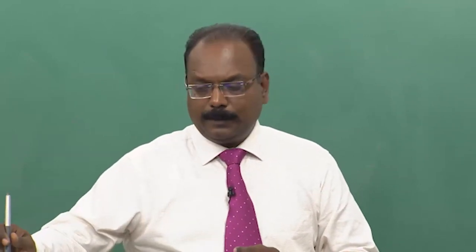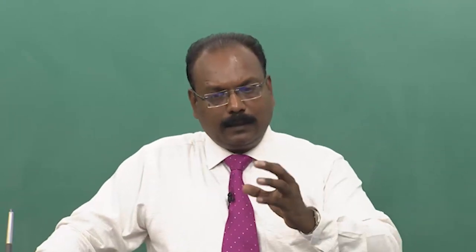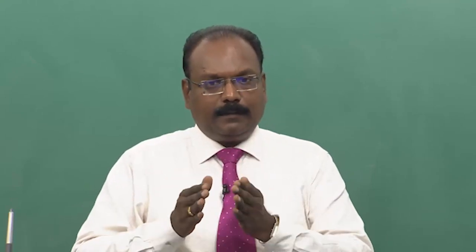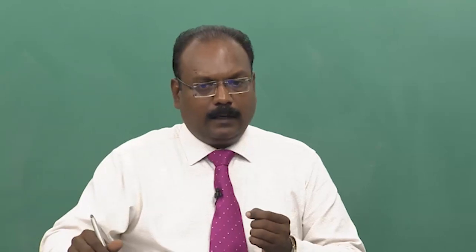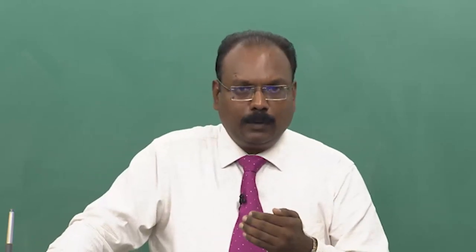Now, despite your best efforts to become an effective communicator, there could be some barriers — things that actually prevent you from communicating effectively. Sometimes it is in you, your personality; sometimes it is because of the receiver. Even when you are trying to involve yourself in encoding and decoding a message, and the other person is trying to decode and understand, there is something in between acting as obstacles — what I call barriers. In this lecture, we will identify what barriers are, how they affect communication, and how we can overcome some of them.